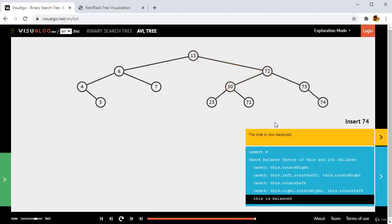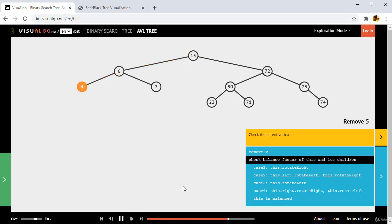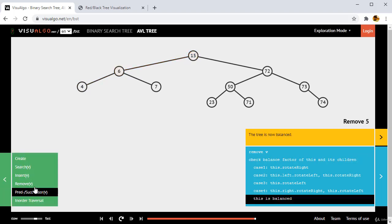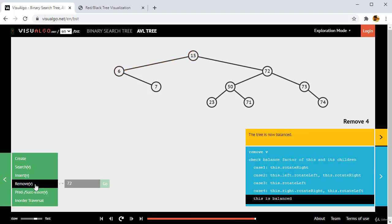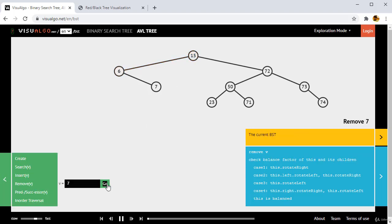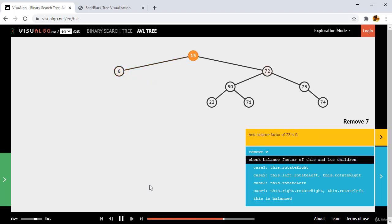So that means after each insertion or maybe after each deletion itself, maybe let me delete more items. Let me delete 5. Let me now delete 4. Since currently it is balanced so it is not doing anything but once we delete this 7 it is going to be unbalanced. Let me delete 7.